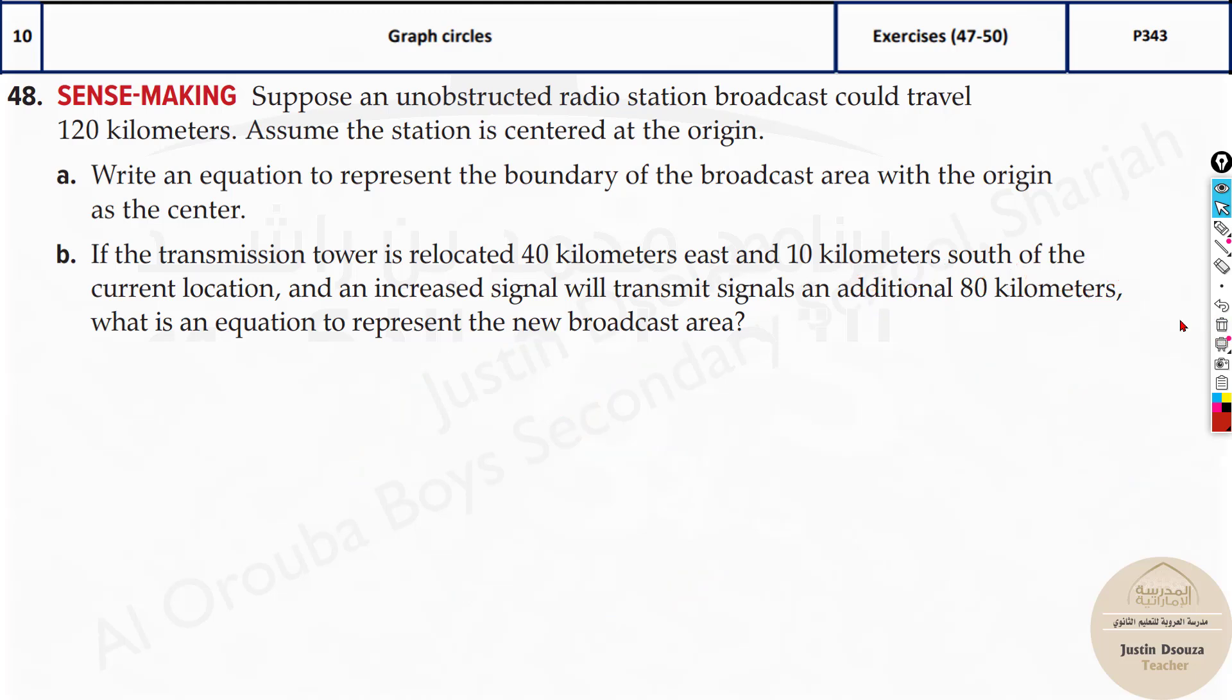Now, another similar problem. Suppose an unobstructed radio station broadcast could travel 120 kilometers. Assume the station is centered at the origin. Write the equation to represent the boundary of the broadcast area with the origin as the center. Now, it's very simple. When it comes to circles, it's just x squared plus y squared equals r squared. Here, what is r squared? 120 squared. So this is all you need to do because they have clearly told it's at the center. And that's the answer.